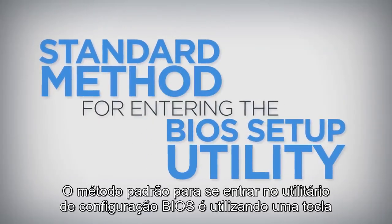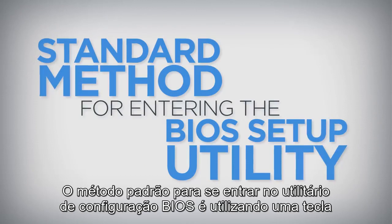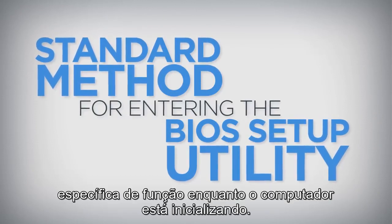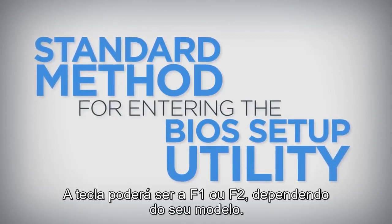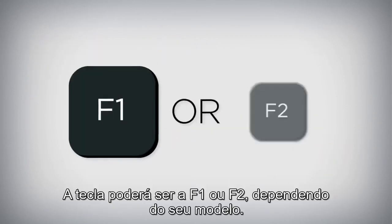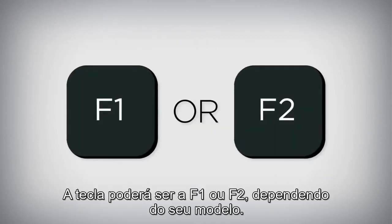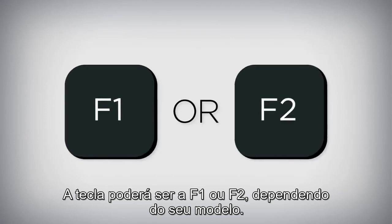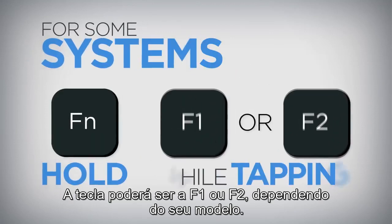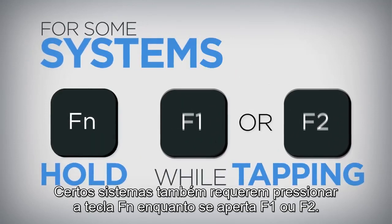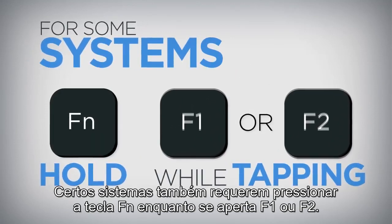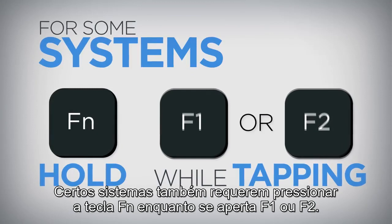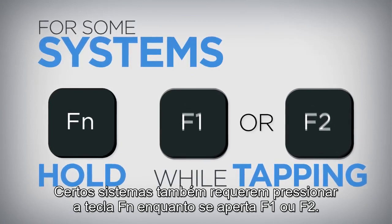The standard method for entering the BIOS Setup utility is to tap a specific function key while the computer is booting. The required key is either F1 or F2, depending on the model of the machine. Certain systems also require holding down the FN key while tapping the F1 or F2 key.